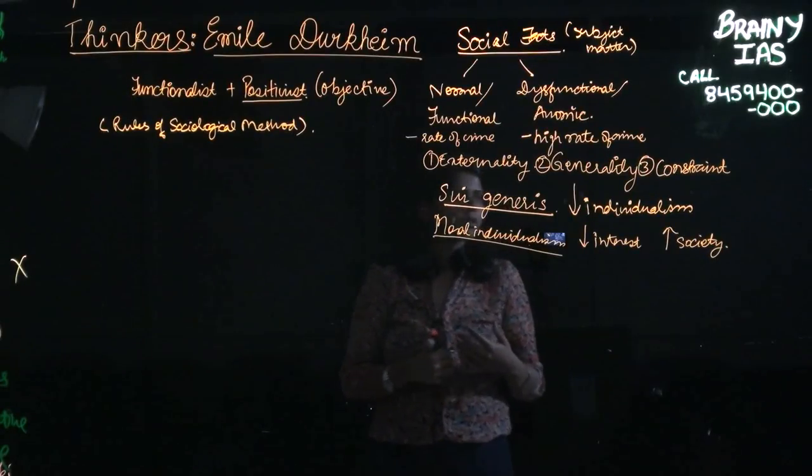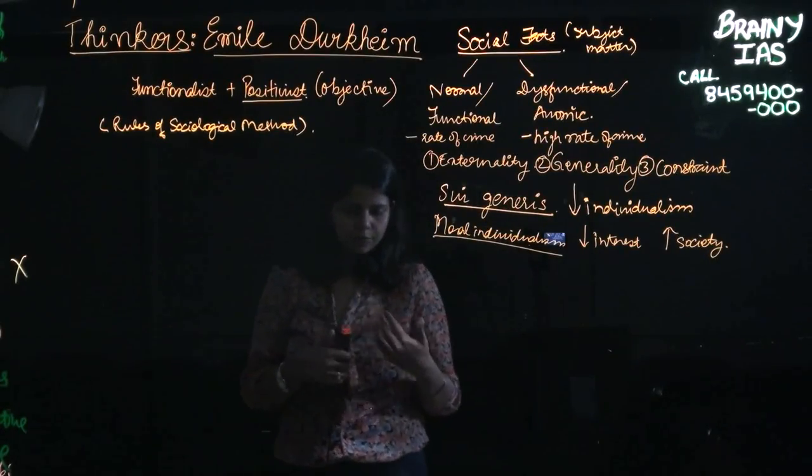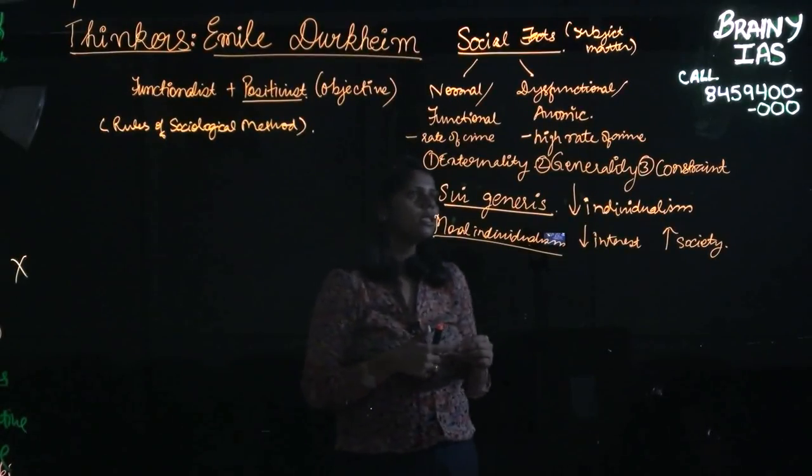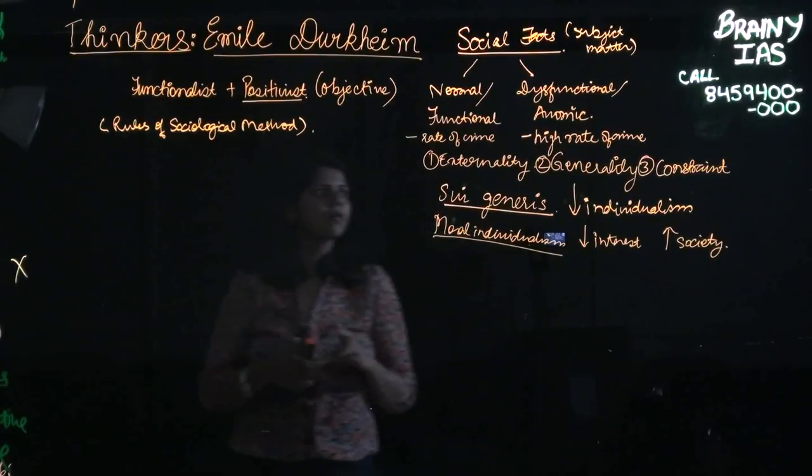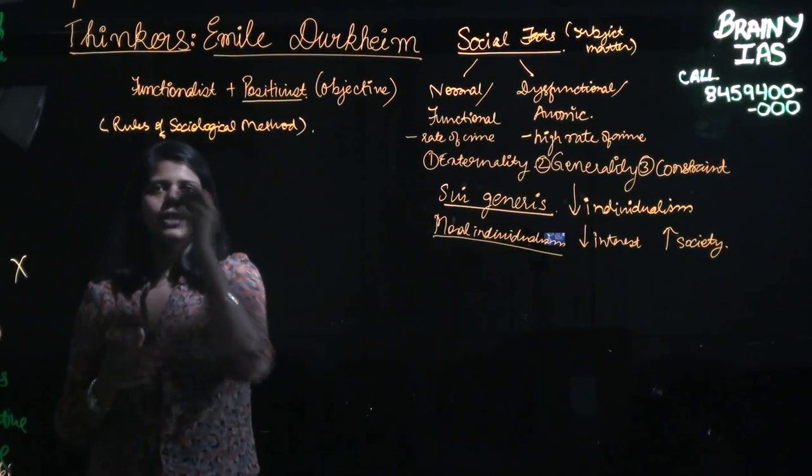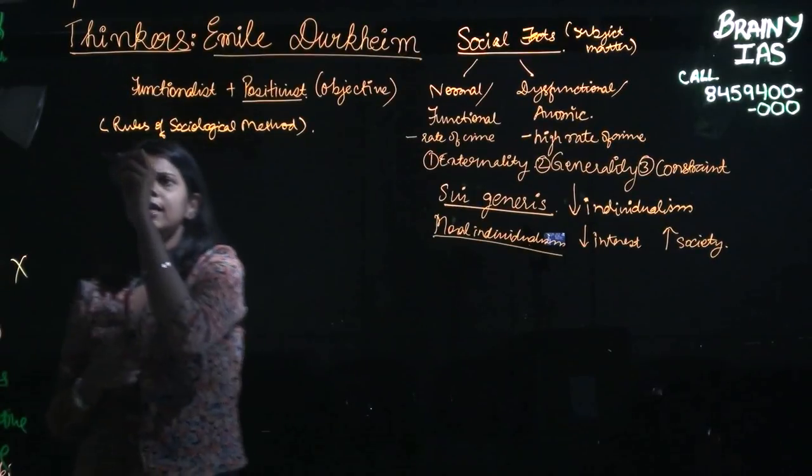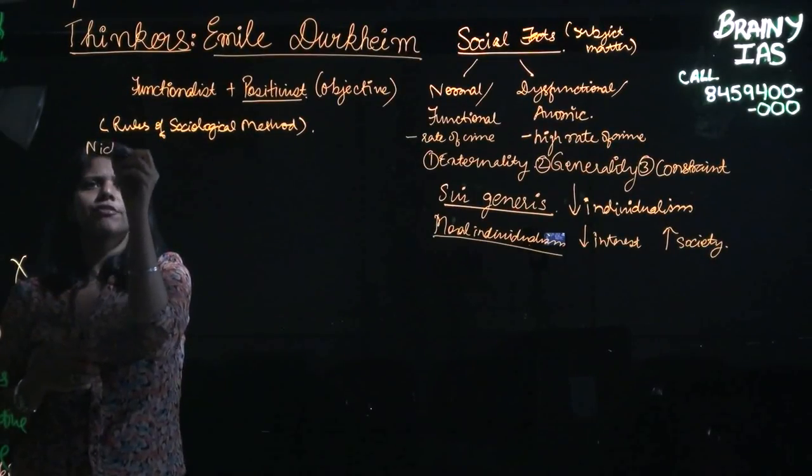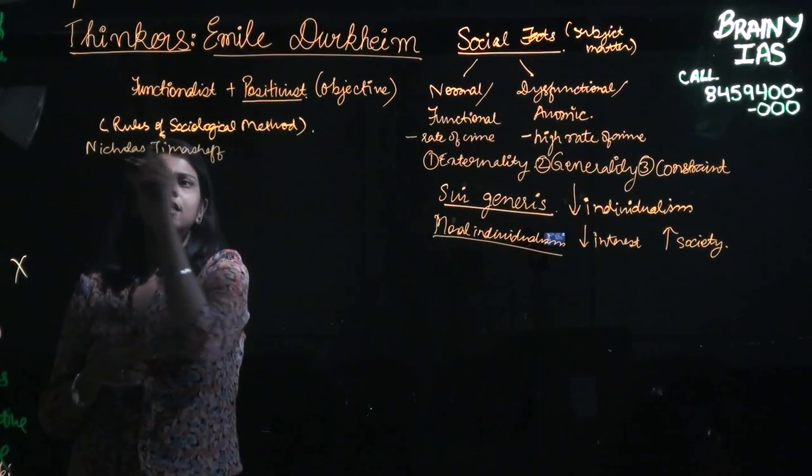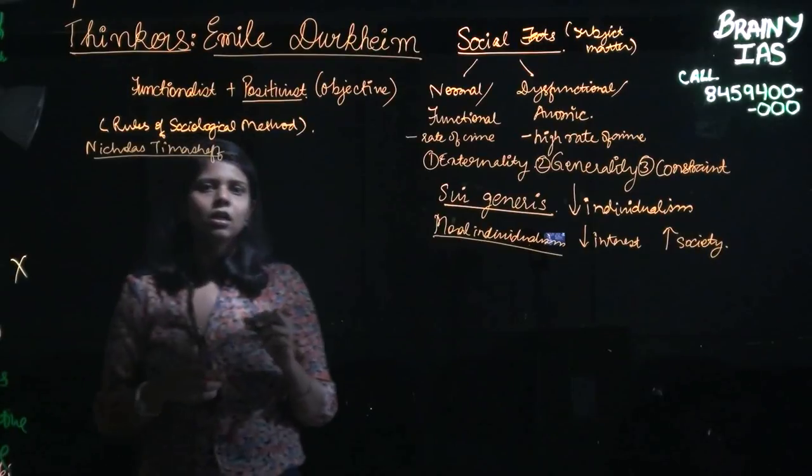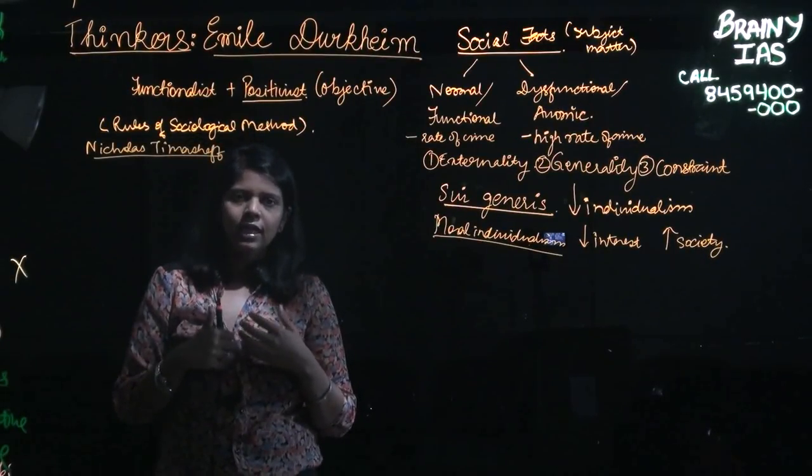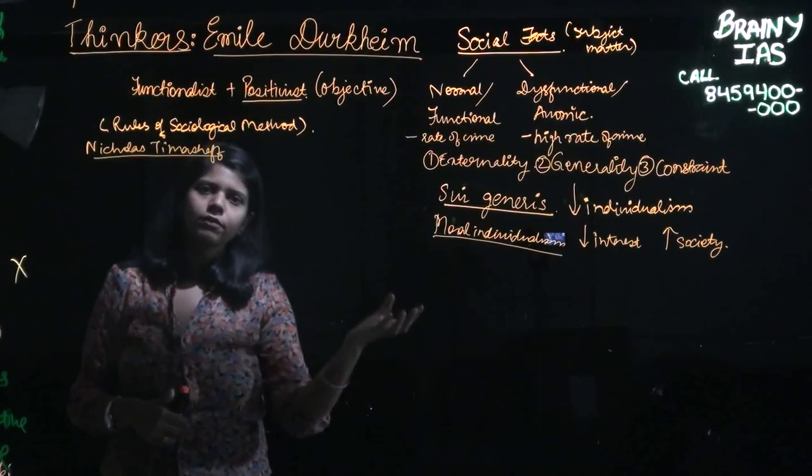In this, there are two types of criticism that Durkheim has to face. First one came from Nicholas Timasheff. Nicholas said that Durkheim is completely out-ruling the presence of an individual conscious. If I have to just be a part of the society, do I not lose my individual identity? So this is one area where he is criticized.